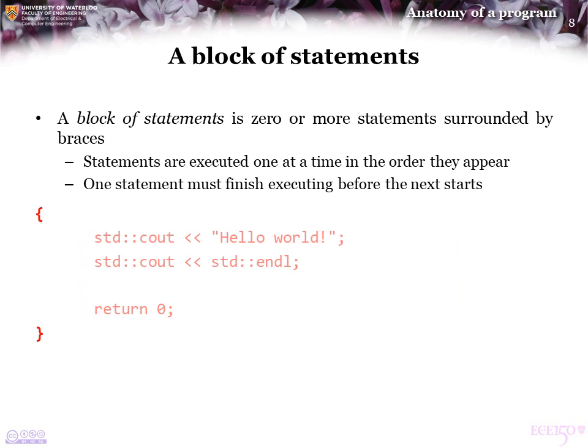A block of statements is zero or more statements surrounded by a matching pair of opening and closing braces. Statements are executed one at a time in the order in which they appear. If we look at this piece of code, we see three statements: the first prints 'hello world' to the console, the second prints an end-of-line character, and the final statement is a return zero statement, which we will cover further later in this course.